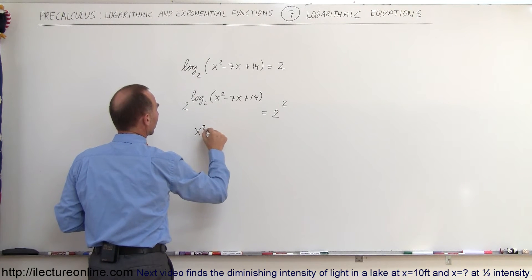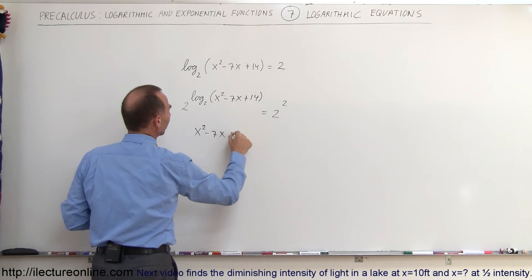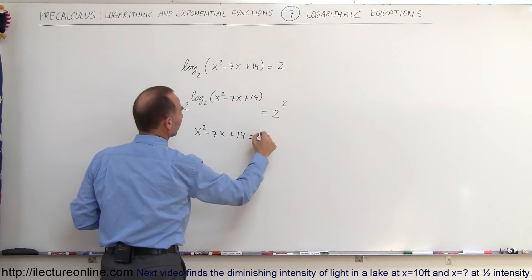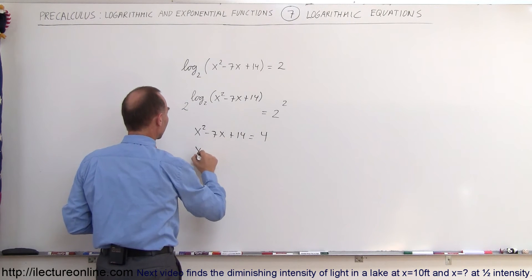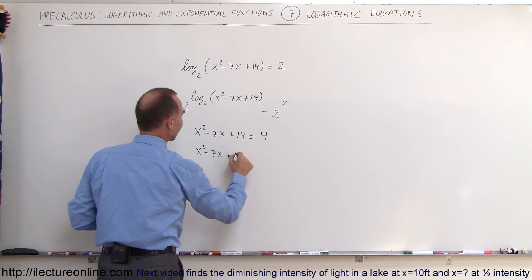This becomes x² - 7x + 14 equals 2 to the second power, which equals 4. Now we move the 4 to the other side and get x² - 7x + 10 equals 0.